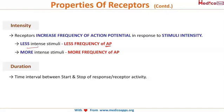The final property is duration. Duration is the time interval between the start and stop of the response — that is, how long the receptor remains active for a given stimulus.